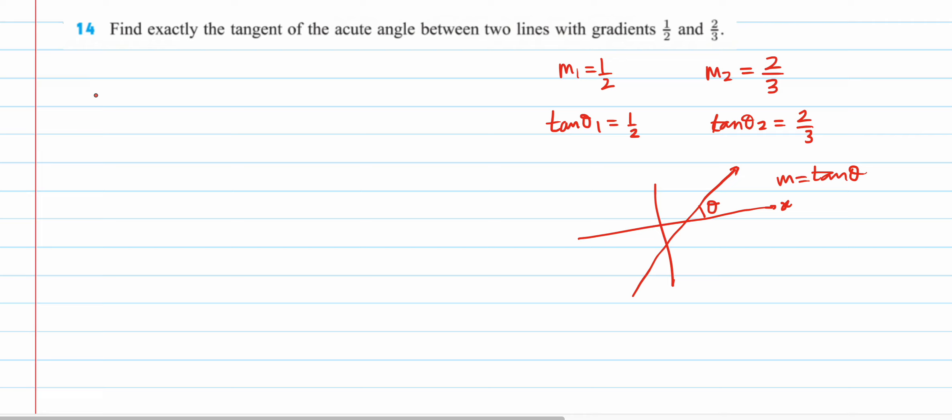So, if you want to find an acute angle between two lines, what you have to do is, basically you have to find tan theta. You do tan theta one minus theta two. So, this you find acute angle. Acute angle, basically you take the modulus of this.